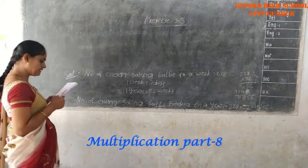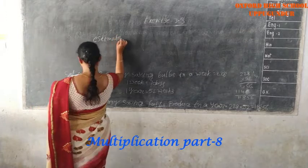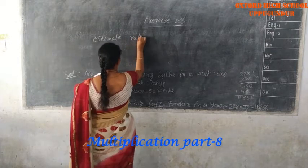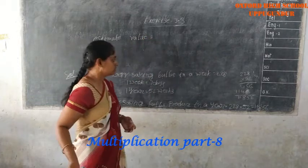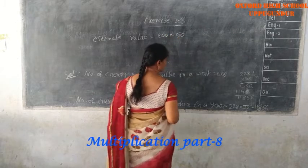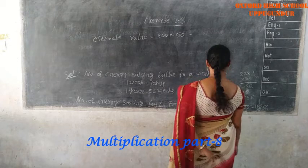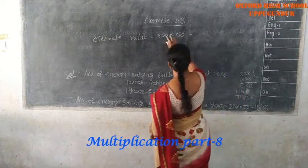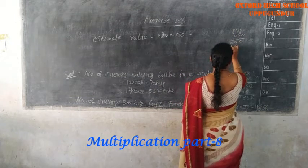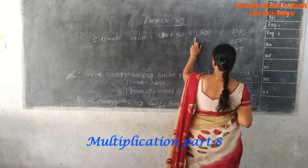Do the estimate of your answer and then find the actual answer. Estimate value: 228 rounds to 230, and 52 rounds to 50. So estimate value equals 230 into 50, which equals eleven thousand five hundred.